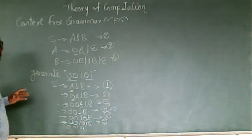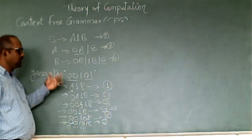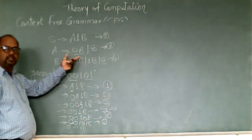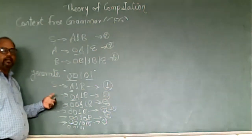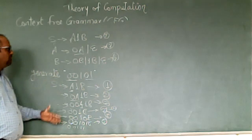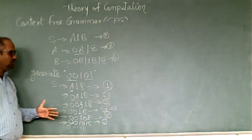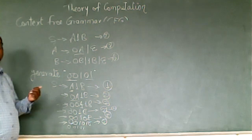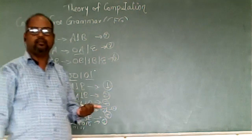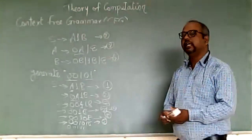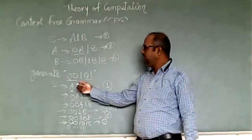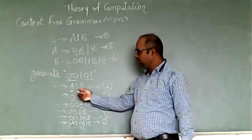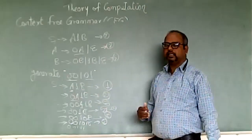That is our required string. We are selecting whichever production is suitable to generate the string, and we can use any production any number of times repeatedly. This is what the actual use of grammar is. This derivation can be done in two ways: one is called the left sentential form, and the next is called the right sentential form. Sentential form means writing the equation in the form of variables and terminals while deriving the string.